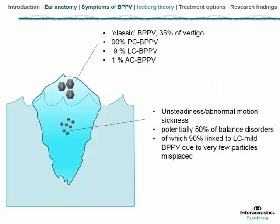This is a theory I like to present — the iceberg theory. Since about 30 years of describing BPPV, we have considered only the emergent part of canalith disorders. In this group you see it is the BPPV group concerning displacement of big particles. Most of the time big particles are in the posterior canal, which concerns about 90% of BPPV. These particles can also go into the lateral canal, but only about 9% of BPPV are in the lateral canal.